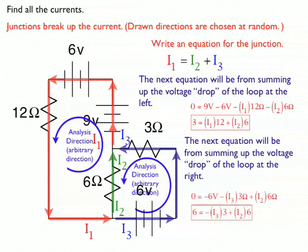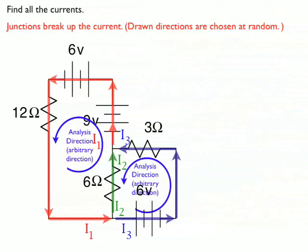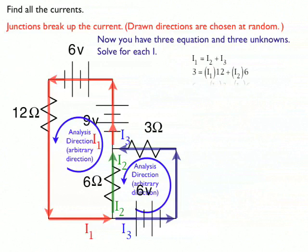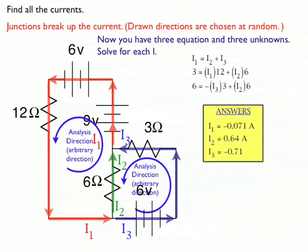At this point, I just need to solve for I1, I2, and I3 using a couple different methods. I could use linear combinations or I could use some matrices. Whatever method you choose, you should get the answers of I1 equaling negative 0.071 amps, I2 is equal positive 0.64 amps, and I3 is equal to negative 0.71 amps.